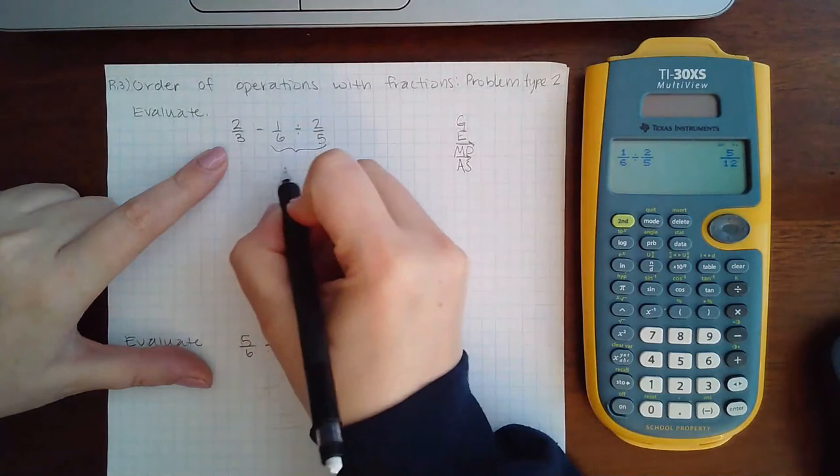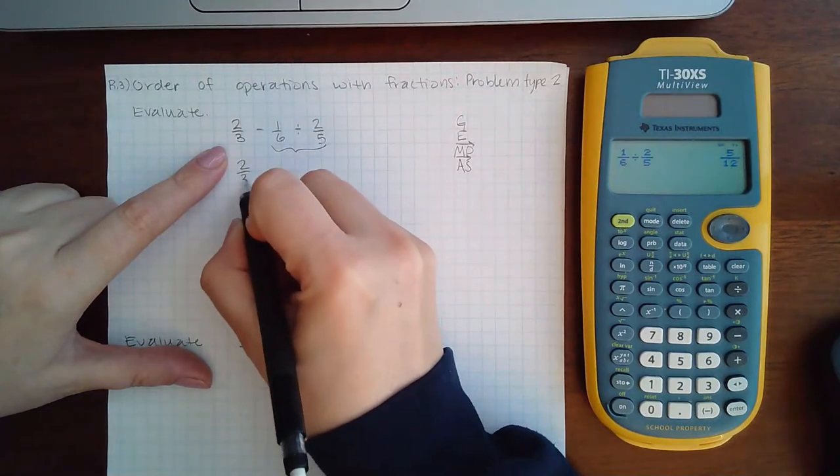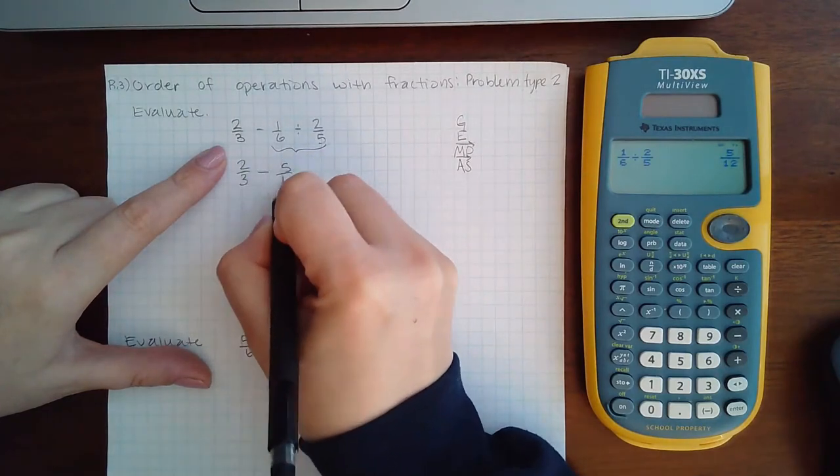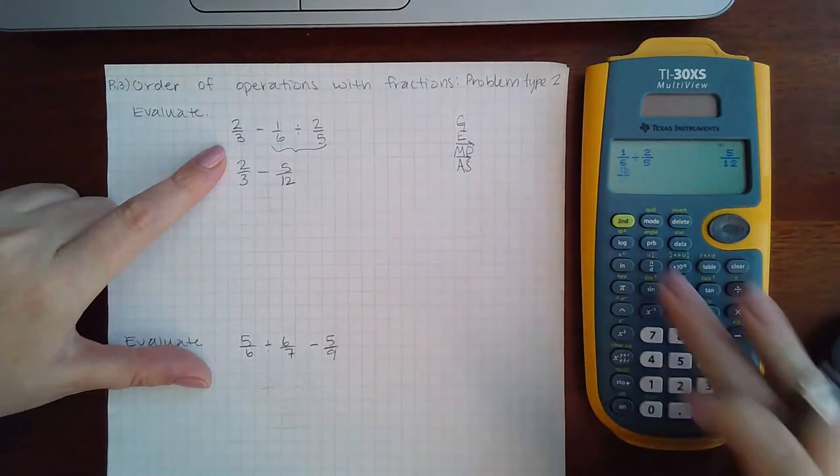And these are going to be rather quick because we are going to do these computations in our calculator. So I'm going to have two thirds minus five twelfths.